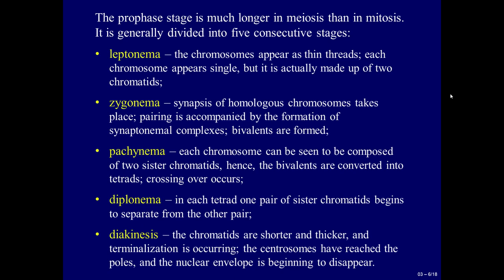Pachytene: each chromosome can be seen to be composed of two sister chromatids. The bivalents are converted into tetrads; crossing over occurs. Diplotene: in each tetrad, one pair of sister chromatids begins to separate from the other pair. Diakinesis: the chromatids are shorter and thicker, and terminalization is occurring. The centrosomes have reached the poles, and the nuclear envelope is beginning to disappear.